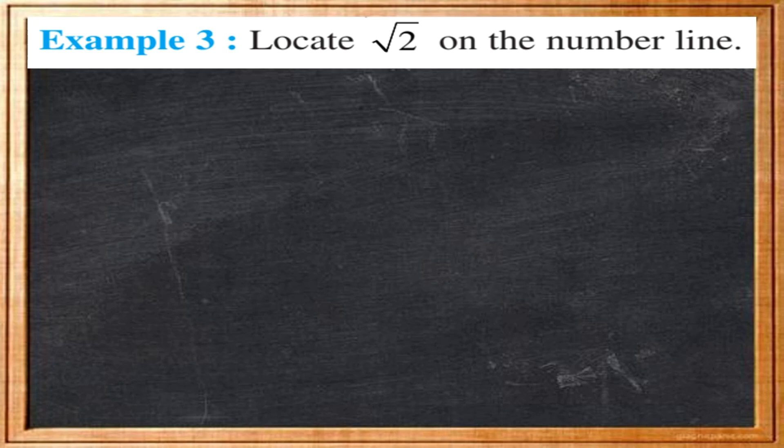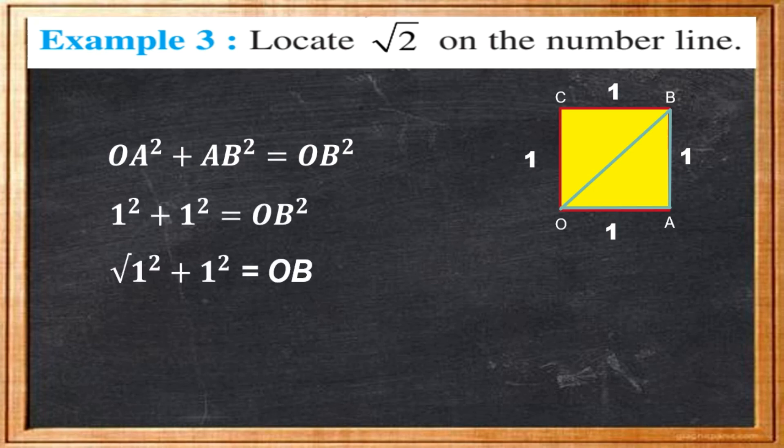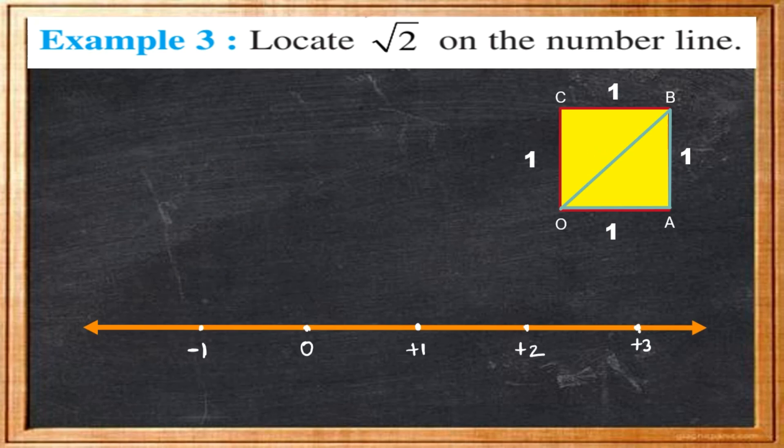To represent root 2 on the number line, consider a square OABC with each side one unit in length as seen in figure. We will use Pythagoras theorem to calculate OB. This will give OB is equal to root of 1 plus 1 which is equal to root 2. Now, transfer triangle OAB onto the number line making sure that the vertex O coincides with 0. We have just seen that OB is equal to root 2. Using a compass with center O and radius OB, draw an arc intersecting the number line at the point P. Then P corresponds to root 2 on the number line.